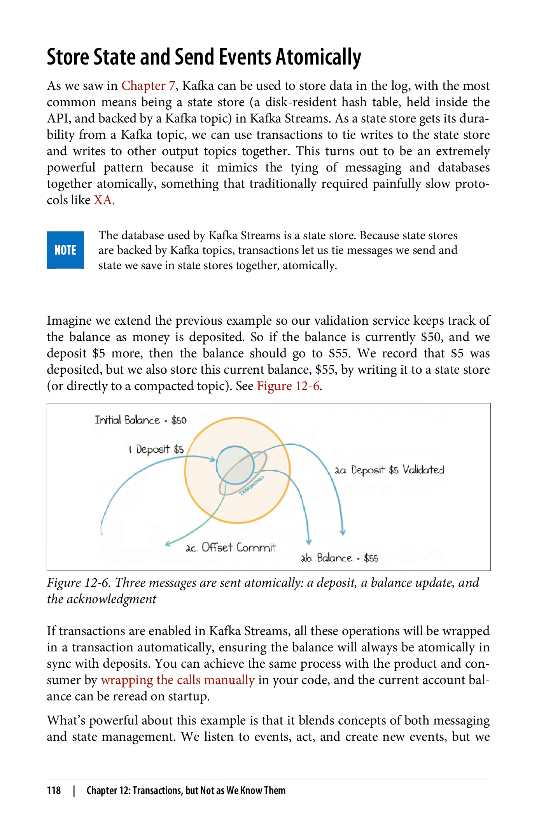Store state and send events atomically: as we saw in Chapter 7, Kafka can be used to store data in the log, with the most common means being a state store — a disk-resident hash table held inside the API and backed by a Kafka topic in Kafka Streams. As a state store gets its durability from a Kafka topic, we can use transactions to tie writes to the state store and writes to other output topics together. This turns out to be an extremely powerful pattern because it mimics the tying of messaging and databases together atomically, something that traditionally required painfully slow protocols like XA. The database used by Kafka Streams is a state store. Because state stores are backed by Kafka topics, transactions let us tie messages we send and state we save in state stores together, atomically.